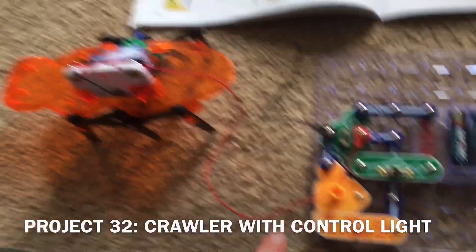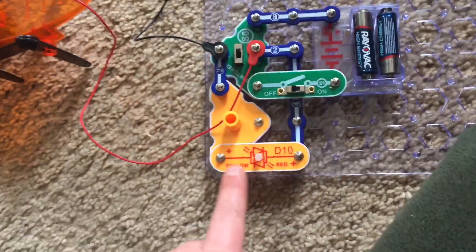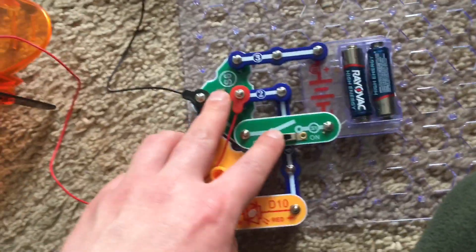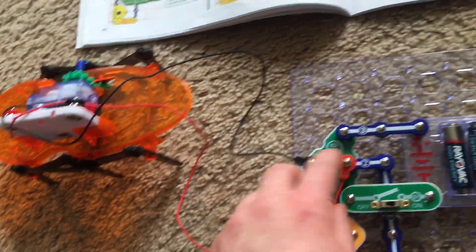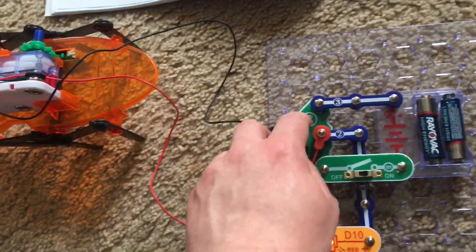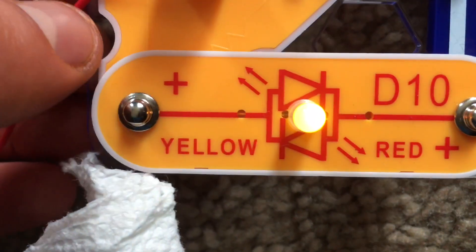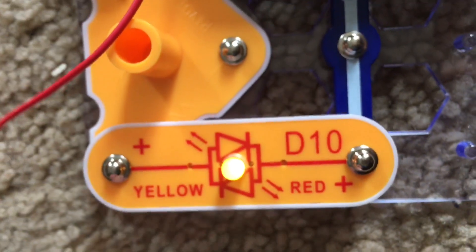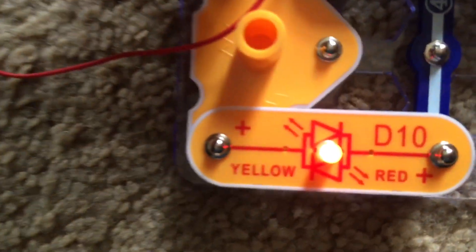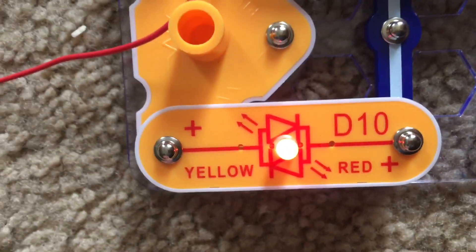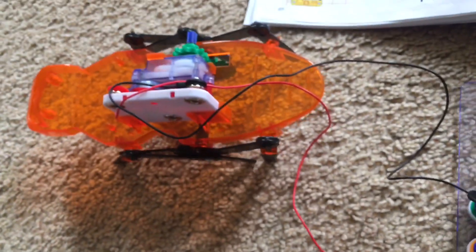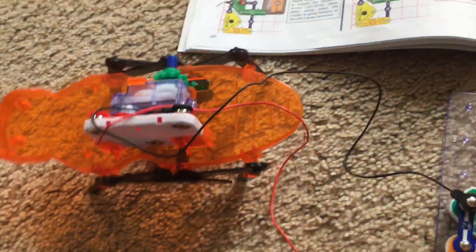Now the crawler has a control light on the circuit that controls it. When I turn on the slide switch and move the switcher towards me the crawler will move forward and the control light is yellow. Yellow indicates that it is moving forward. However when I move the switcher away from me the bipolar LED is now red indicating that the crawler is moving backwards.